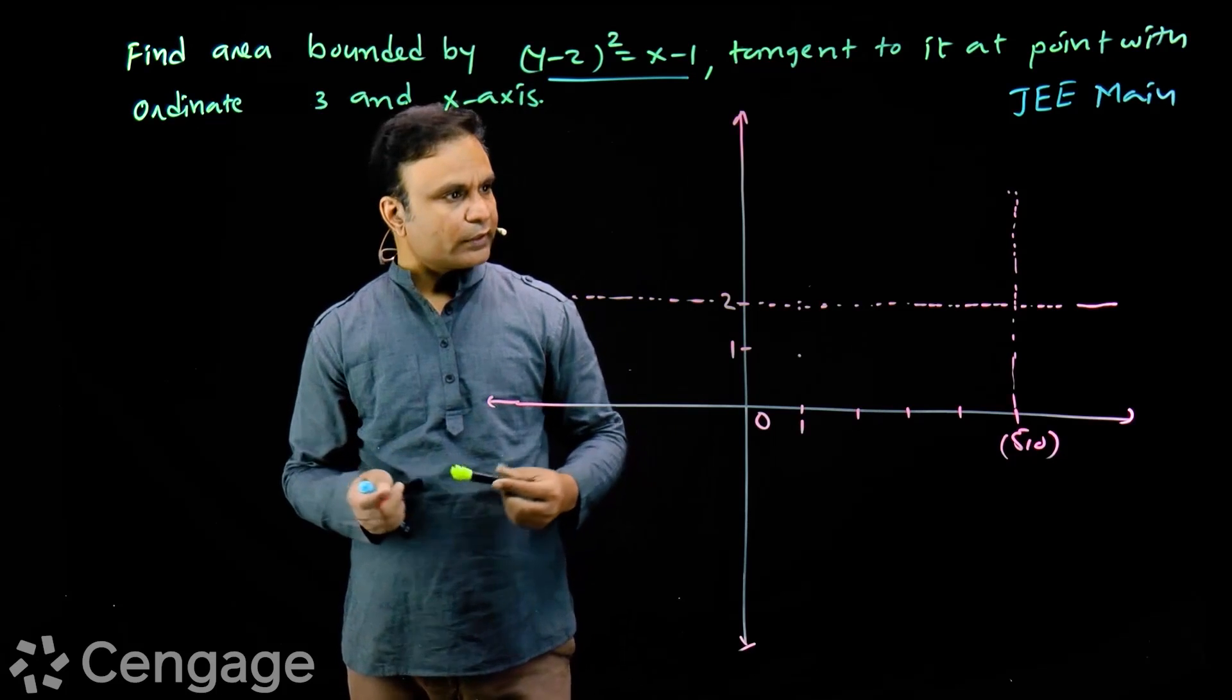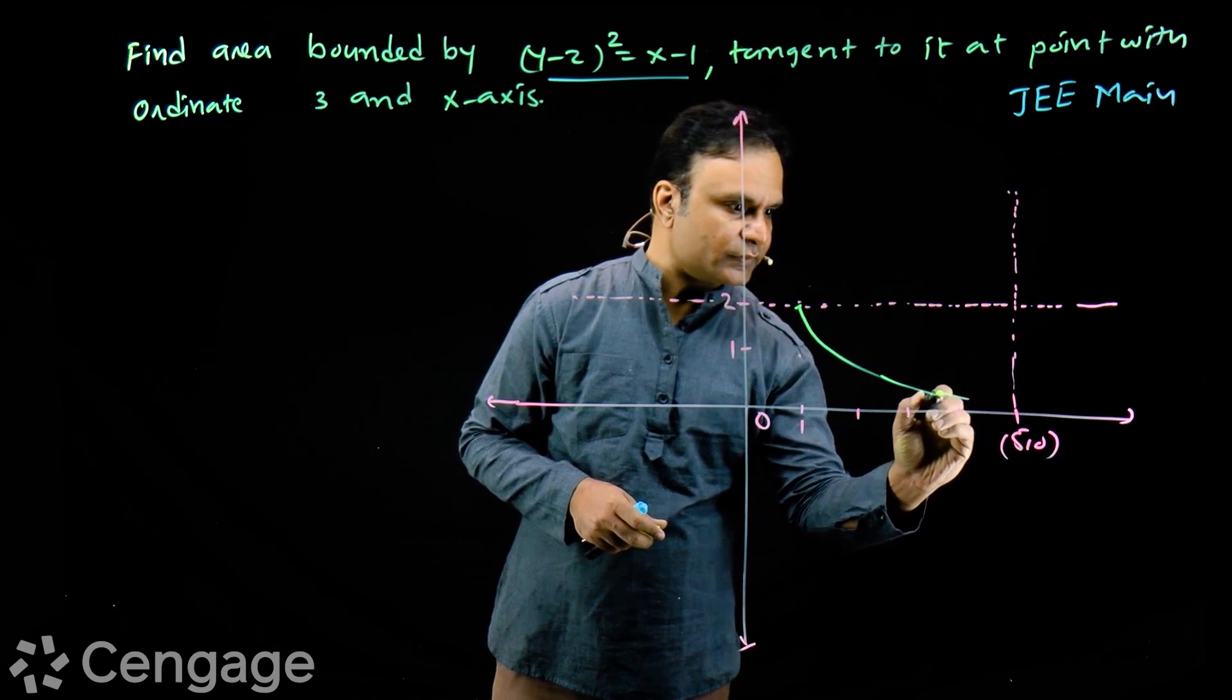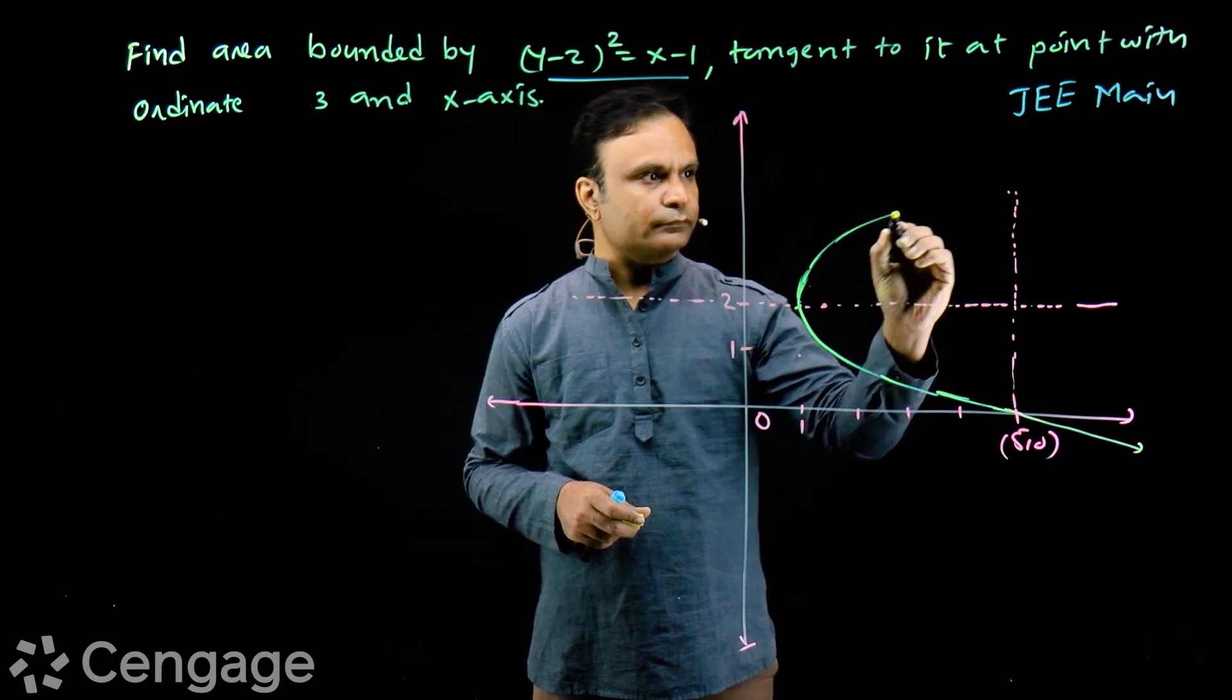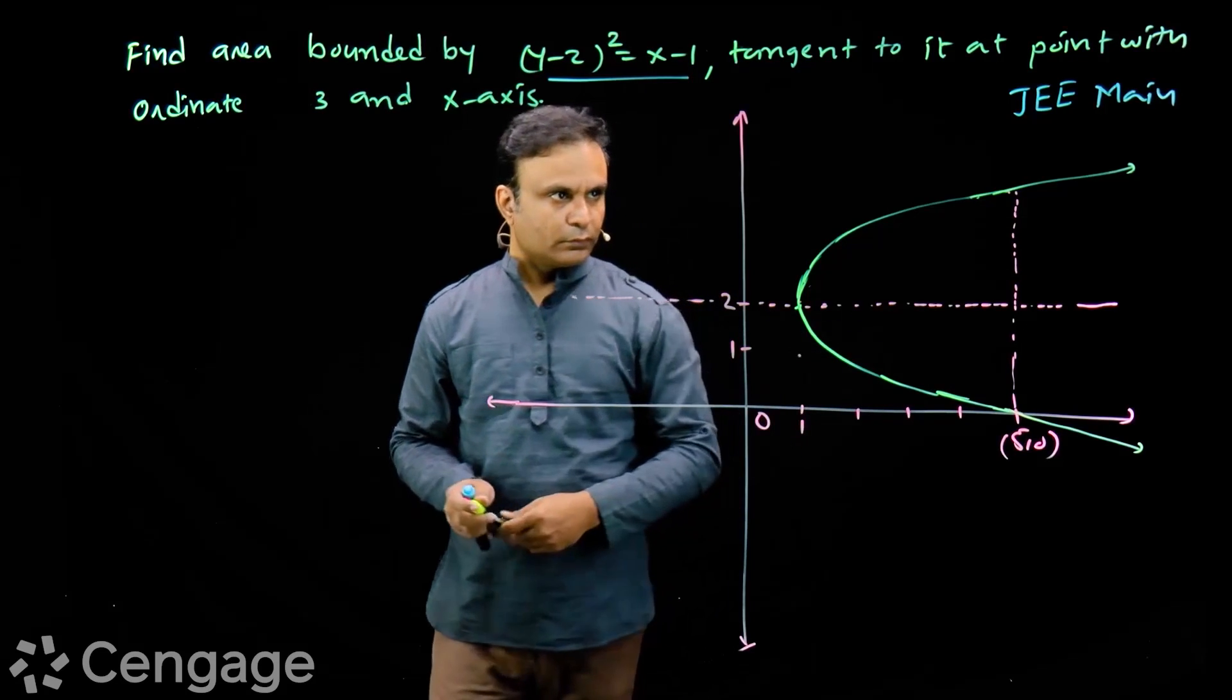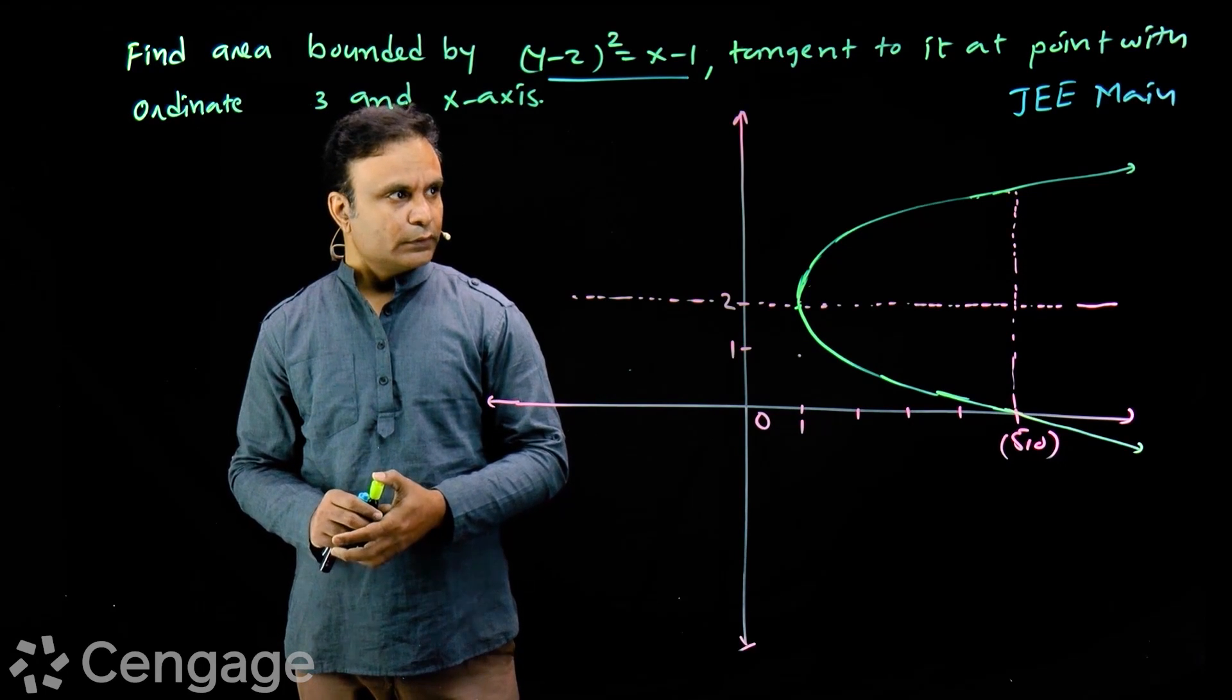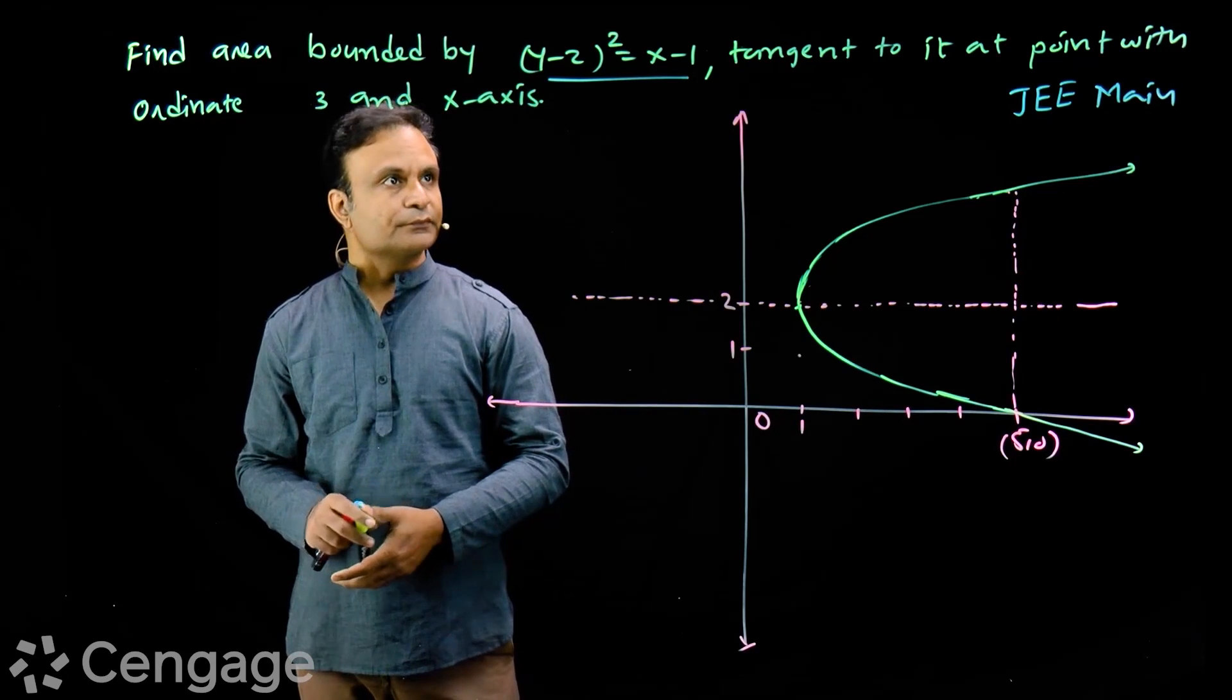Now we draw the parabola's graph. Vertex is here, intersects x-axis at (5,0). We draw the graph above the axis. We should have control over the graph. If we blindly draw the graph, then the bounded area we need to see won't be visible.